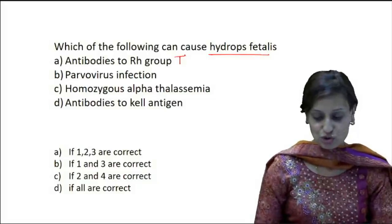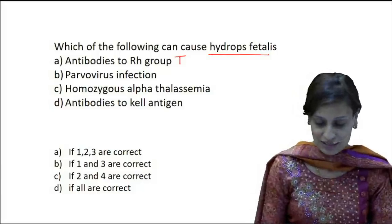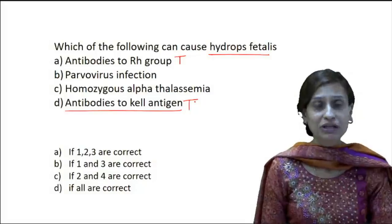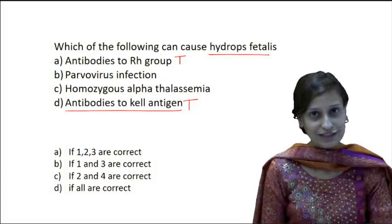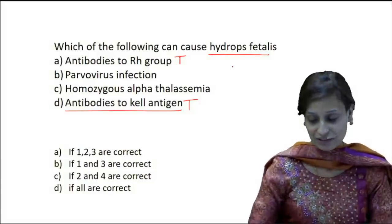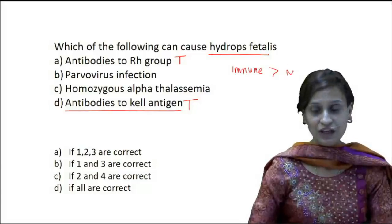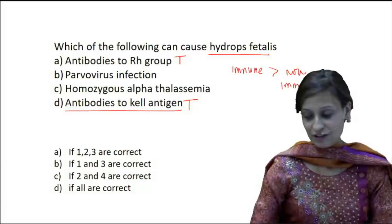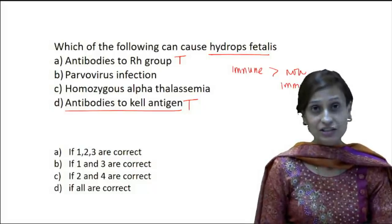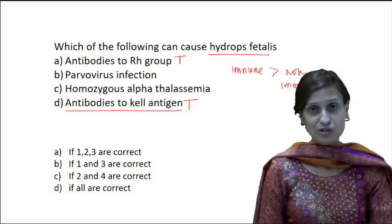Option A is antibodies to the RH group, and option D is antibodies to the Kell antigen — both are immune-mediated causes of hydrops fetalis. Hydrops fetalis can be non-immune as well as immune-mediated, and the immune-mediated type is more common. Both A and D are antigens on red blood cells to which an immune response can develop.